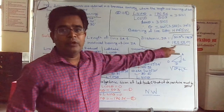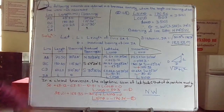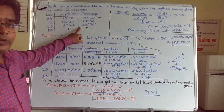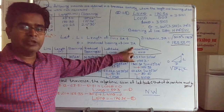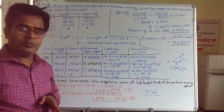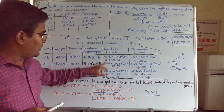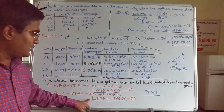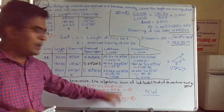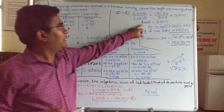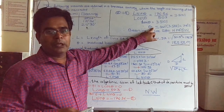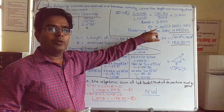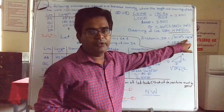To calculate the length of line DA, we use the Pythagorean theorem. The latitude and departure form the two legs of a right triangle, with the line length as the hypotenuse. Therefore, length DA = √(latitude² + departure²) = √(50.3² + 176.56²) = 183.58. So the length of line DA is 183.58 and its reduced bearing is N74°5'W.